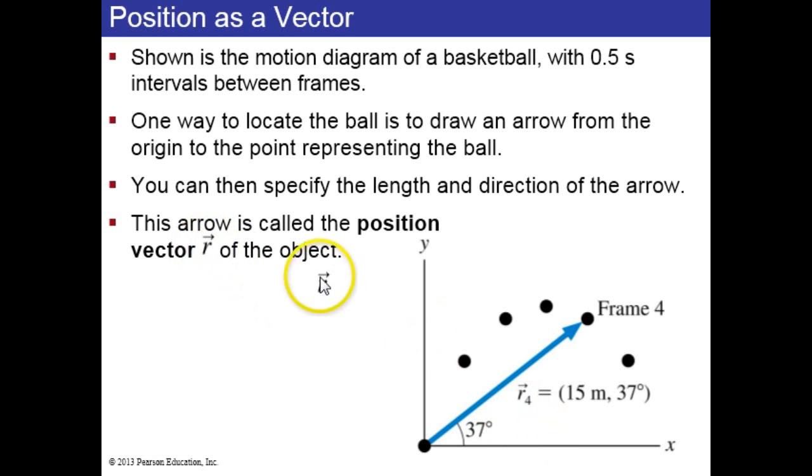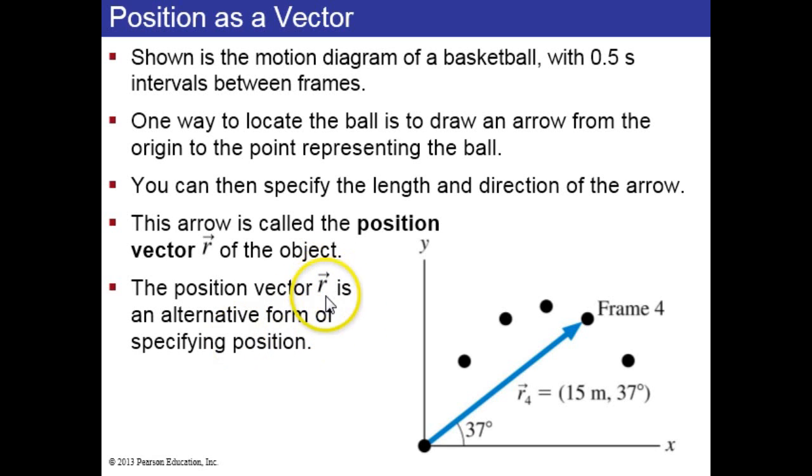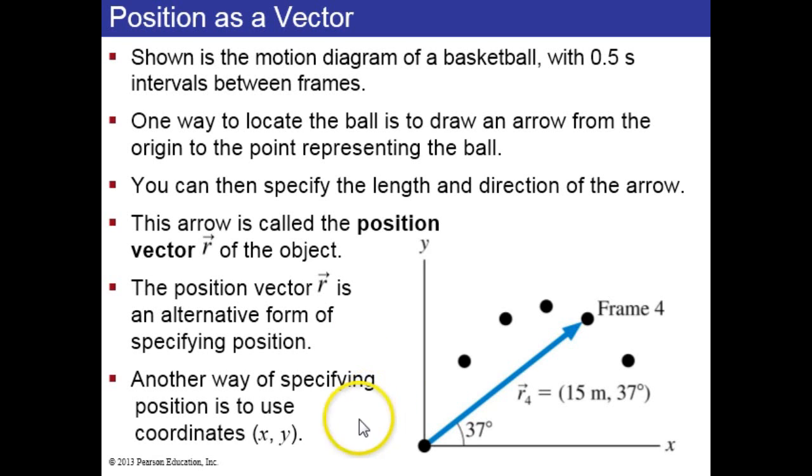And so r with a little arrow on top is called the position vector. The position vector r is one way of specifying position. The other way is to use coordinates x, y. Either way is fine.